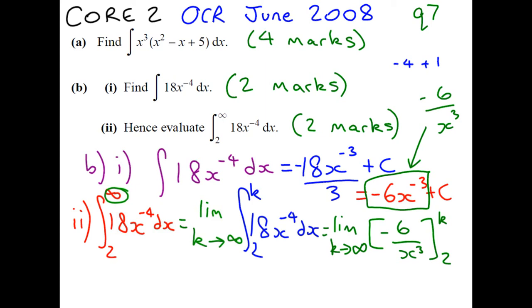So on our next line, the first bracket with our upper limit is going to be minus 6 over k cubed. And our second bracket is going to be minus 6 over 2.